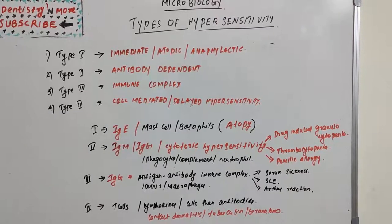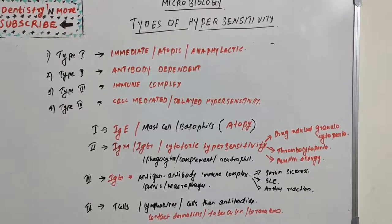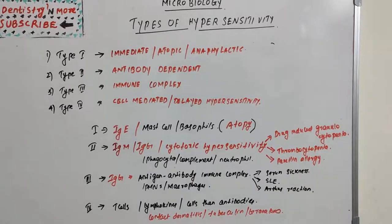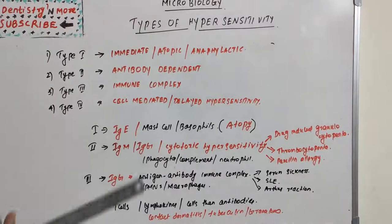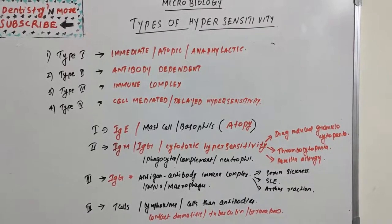Hello everyone, welcome back to another session in Dentistry and More. Today we have a small topic in microbiology: types of hypersensitivity. Hypersensitivity refers to undesirable reactions produced by the normal immune system, which includes allergies and autoimmunity. Autoimmunity is when our own antibodies fail to recognize the antigen — something which comes from outside — and instead act against our own cells, which these antibodies are supposed to protect.